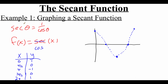The secant is 1 over the cosine, so I'm going to take these y-values and think about their reciprocals. Starting with the y-values of 0: if I flip those over I'd get 1/0, which is undefined. So anywhere the cosine function has zeros, the secant function is undefined — meaning there's an asymptote at that x-value. This secant graph has two asymptotes: one at π/2 and one at 3π/2.